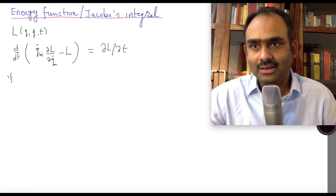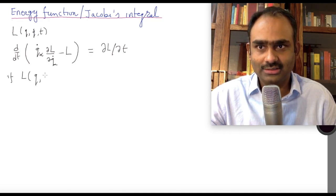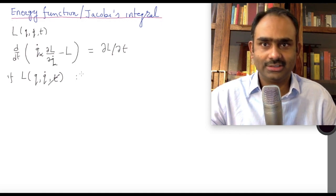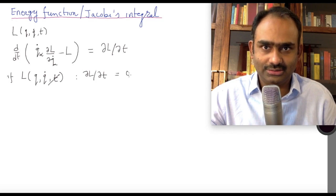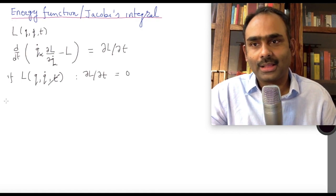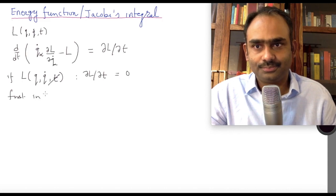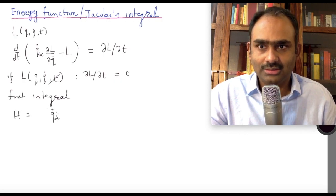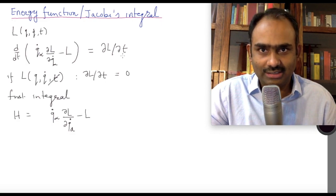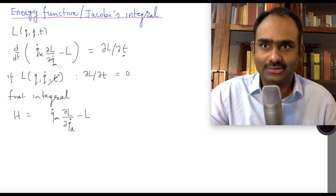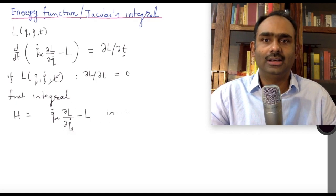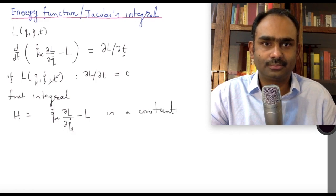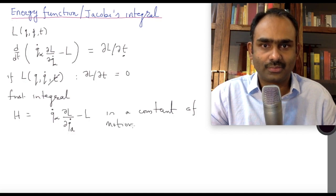Now, if the Lagrangian is not an explicit function of t — meaning ∂L/∂t = 0 — then the first integral of motion h = Q̇_α (∂L/∂Q̇_α) − L is a constant of motion, because its total time derivative is zero. So h is conserved.